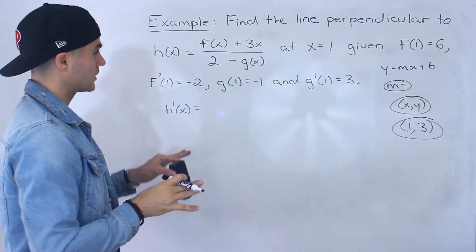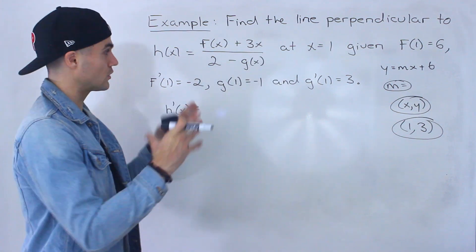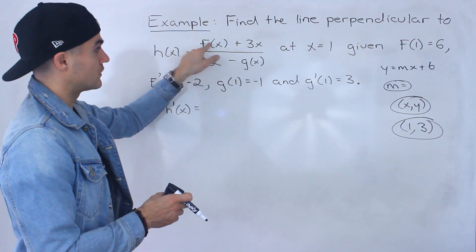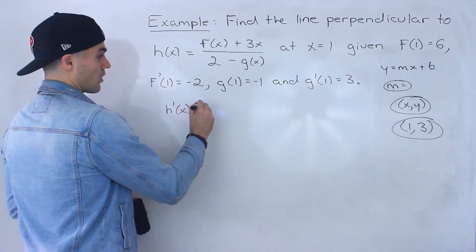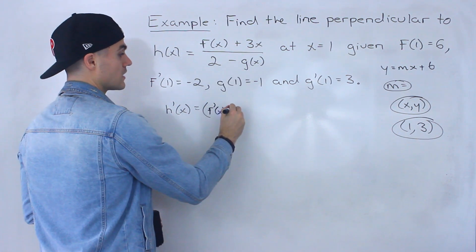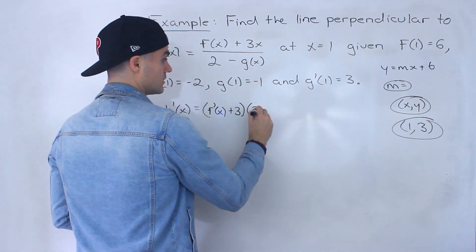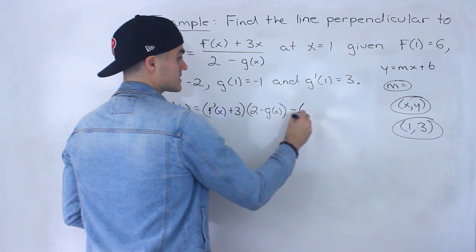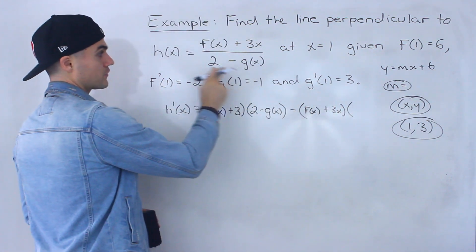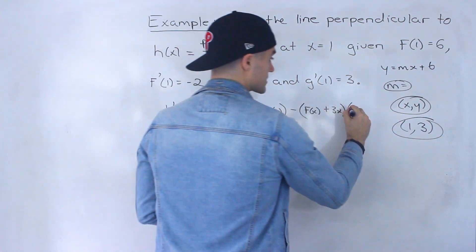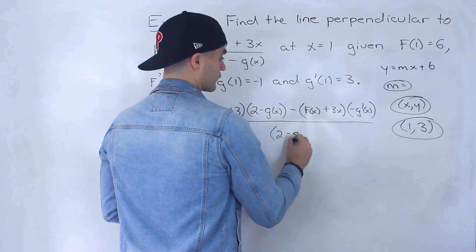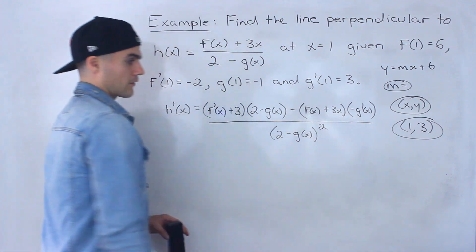This is where it gets a little tricky because we have functions within a function. For the overall function we use the quotient rule, and we'll also have to take the derivative of the inner functions. So h prime of x: take the derivative of the top — f prime of x plus 3 — multiplied by the bottom function, minus the top function times the derivative of the bottom function. The derivative of 2 is 0, and the derivative of negative g of x is negative g prime of x. All of this is over the bottom function squared.